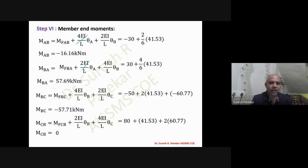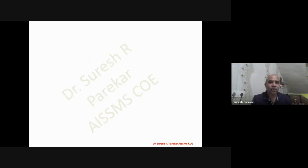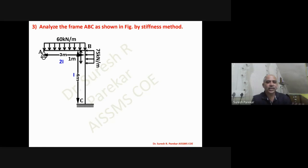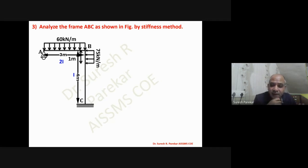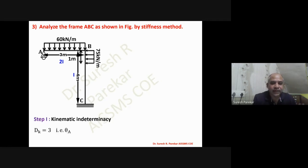Problem 3: the frame now has three unknown displacements — θA, θB, and Δ (sway). DK = 3. Support A is a roller, so the beam can move, causing the column to sway.